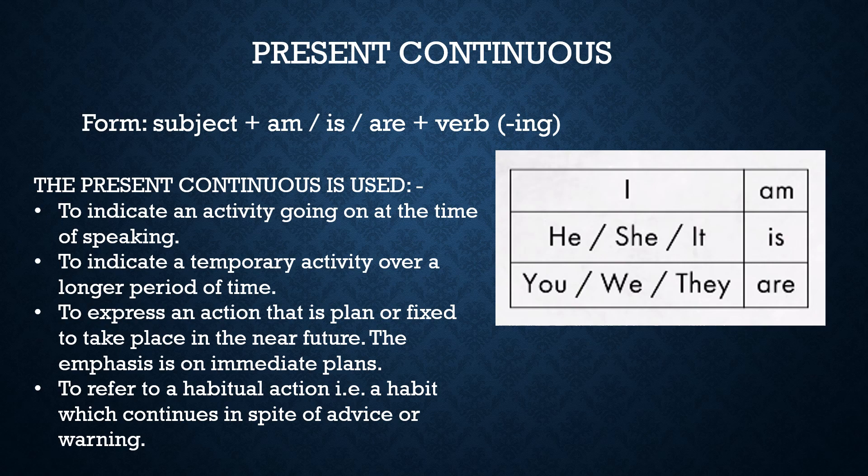The present continuous tense is used to indicate an activity going on at the time of speaking — for example: 'The boys are playing hockey,' 'She is singing a song.' It is also used to indicate a temporary activity over a longer period of time — for example: 'I am teaching The Merchant of Venice,' 'She is doing research on Shakespeare's plays.'